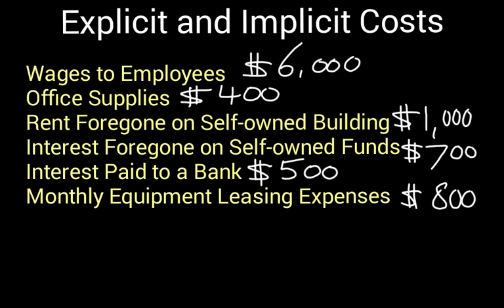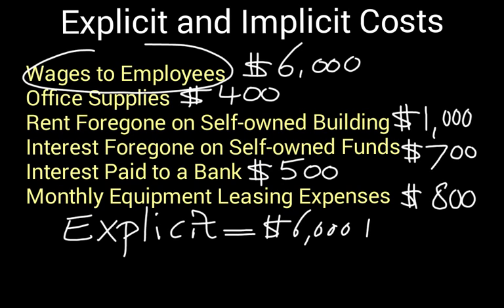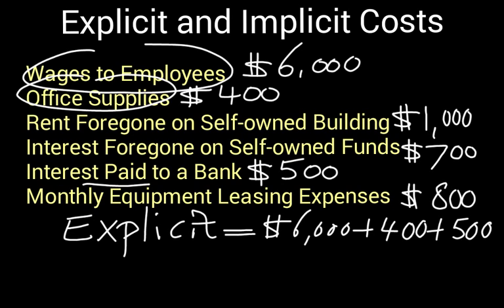Now, what are the explicit and implicit costs? For explicit costs — the visible, out-of-pocket expenses — wages to employees is $6,000, office supplies is $400. Rent foregone is not an explicit cost, and interest foregone is also implicit. Interest paid to the bank is explicit — $500. And monthly equipment leasing expenses are also explicit — $800.